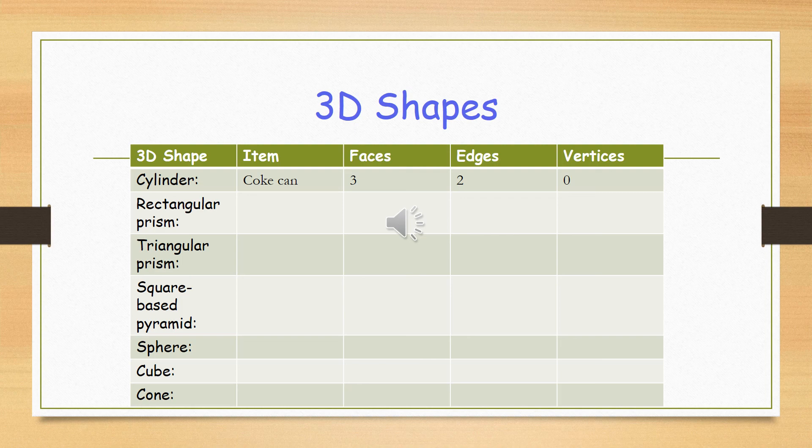So, a Coke can, for instance, has got three faces, two flat faces and one curved face. It has two edges and no vertices.